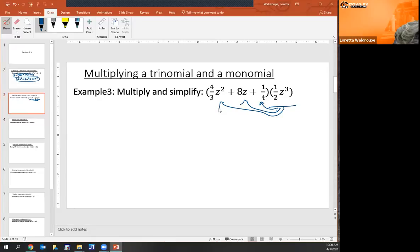One half times four thirds would be two thirds, and z squared times z cubed would be z to the fifth. One half of 8 would be 4 and z cubed and z would be z to the fourth because there's an understood one on that.